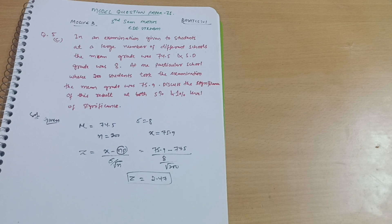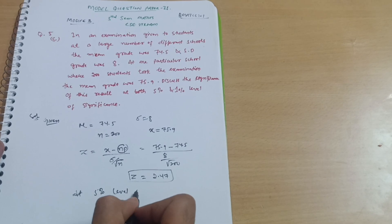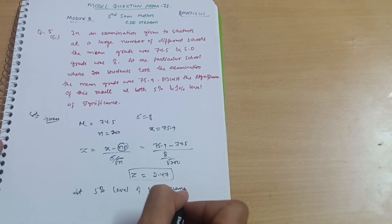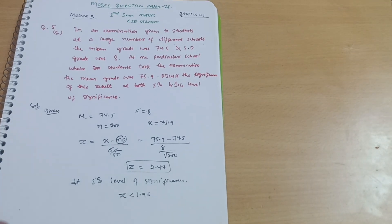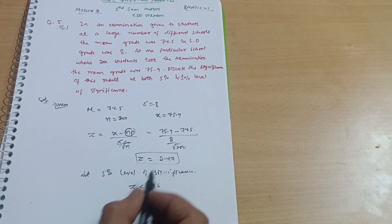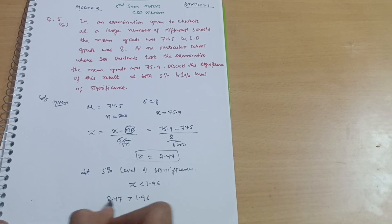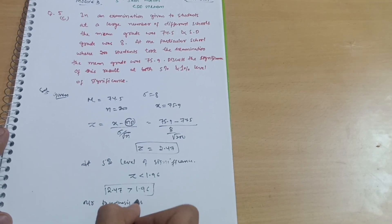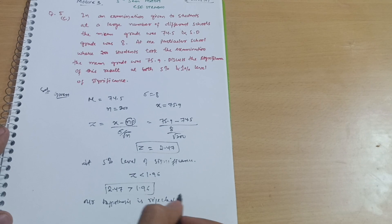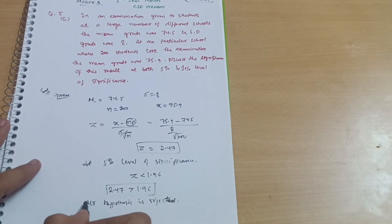Now we check the significance level at 5% and 1%. At 5% level of significance, the z value should be less than 1.96 — that is the standard tabulated value. In this case, we are getting 2.47, which is greater than 1.96. So our hypothesis is rejected. If it were less than 1.96, hypothesis would be accepted, but here it is rejected.